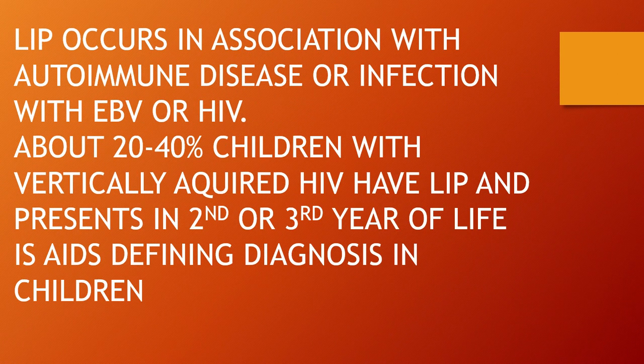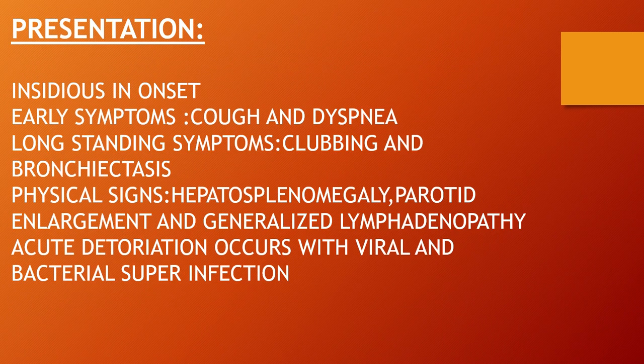LIP occurs in association with immune disease or infection with EBV or HIV. For children who vertically acquire HIV, about 20 to 40 percent develop LIP, and it presents in the second or third year of life. This is an AIDS-defining diagnosis in children.